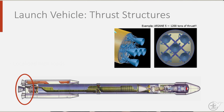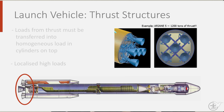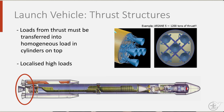Thrust structures transfer the enormous thrusts from the engines to the main stages of the launcher. To put a number on it, the European Ariane 5 rocket produces 15,000 kilonewtons at liftoff. This concentrated load must be distributed into the space structure via a conical structure.